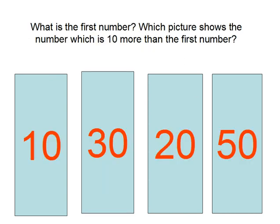What is the first number? Which number shows the number which is ten more than the first number? The first number is ten, so the answer is twenty. This is the right answer.